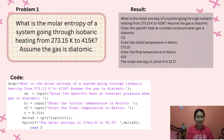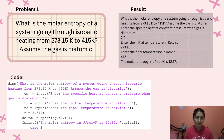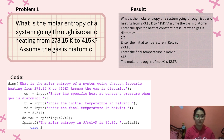Moving on to our last course, which is Physical Chemistry 2. The first problem is: what is the molar entropy of a system going through isobaric heating from 273.15 Kelvin to 415 Kelvin? Assume that the gas is diatomic. You enter the specific heat at constant pressure for a diatomic gas, which is 7/2; the initial temperature, 273.15 Kelvin; and the final temperature, 415 Kelvin. The molar entropy in joules per Kelvin mol is 12.17.